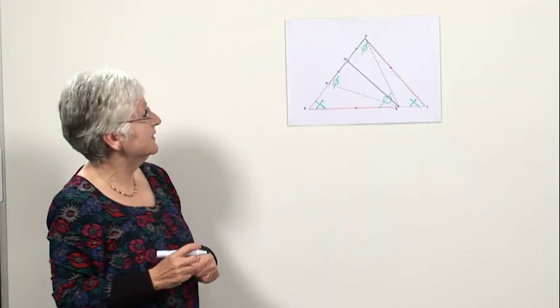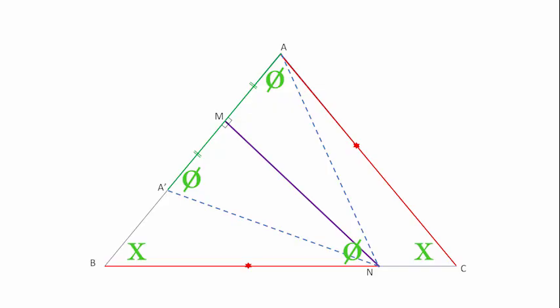That means that the supplement of the angle NA dashed A is equal to the supplement of the angle BNA. So these two angles here have the same size.